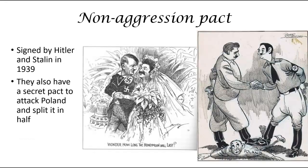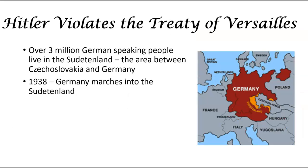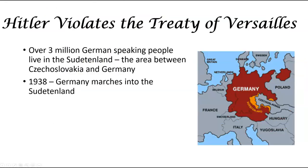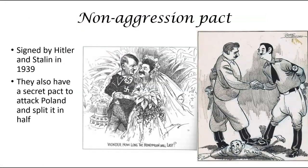A year later, Hitler has been communicating with Stalin in secret, and it comes out that they sign a non-aggression pact. As part of that pact — announced to the world — there is a secret part where they agree to attack Poland and split it in half, because Poland sits between Russia and Germany. Poland is one of those places that has a country and then doesn't have a country repeatedly. Both Germany and Russia want Poland as part of their territory. Political cartoons really mock Germany and Poland and their aggression pact.